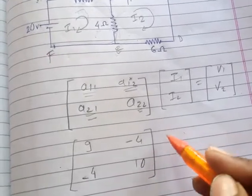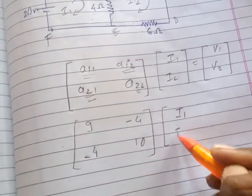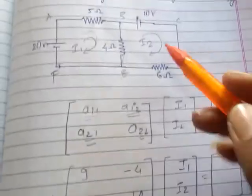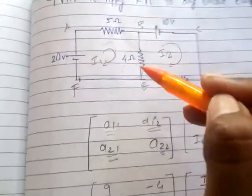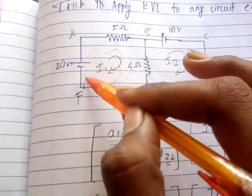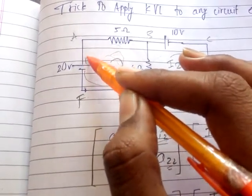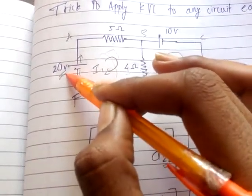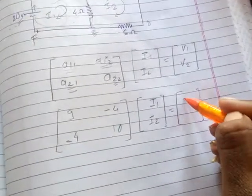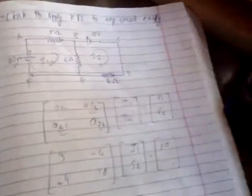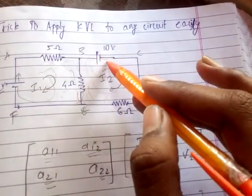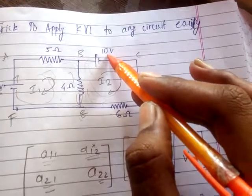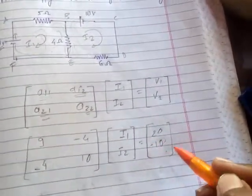For voltages or EMFs, you check the direction of the current. For loop I1 the current goes clockwise from negative to positive, so we take the voltage as positive 20 volts. For loop I2, the current goes from left to right and encounters the source from positive to negative, so we take 10 volts as negative, writing it as minus 10.